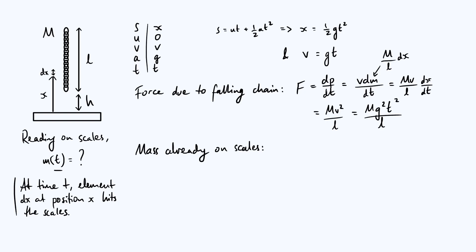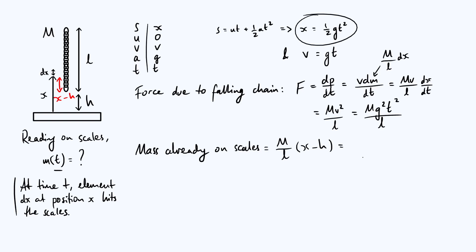We also need to know how much of the chain is already resting on the scales, because that part is exerting its own weight. From the diagram, the length of chain already resting on the scales by the time the element at position x has just come into contact is (x − h). So the mass already on the scales is (M/L)(x − h). Substituting x = ½gt², this becomes (M/L)(½gt² − h) — expressed as a function of time, since ultimately we need everything in terms of t.